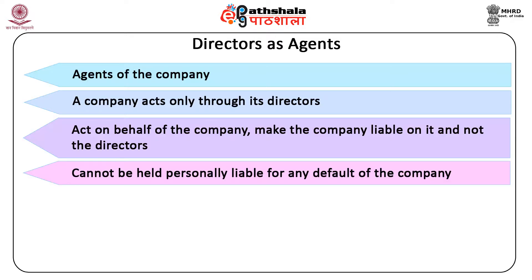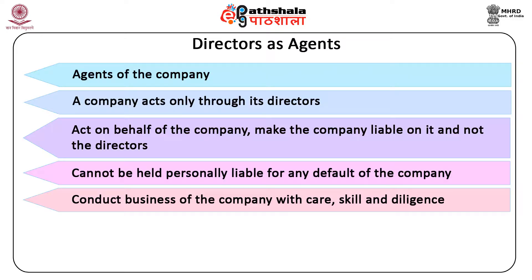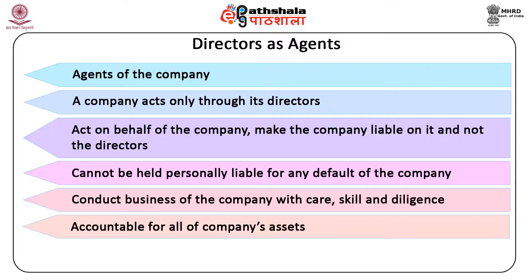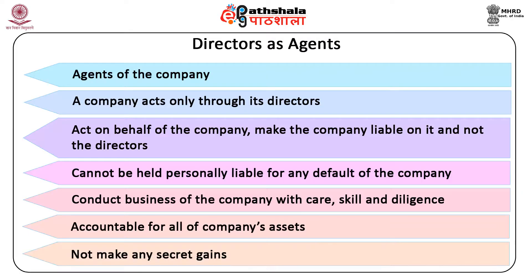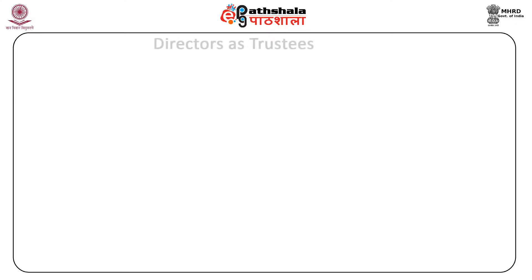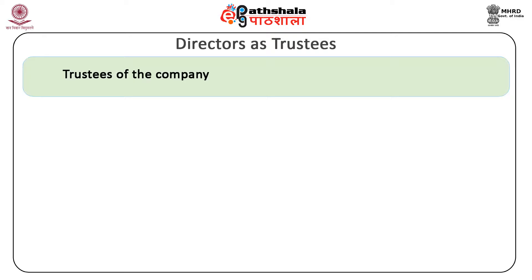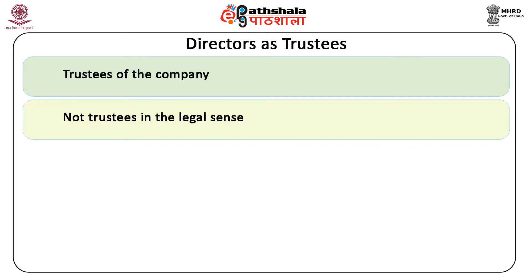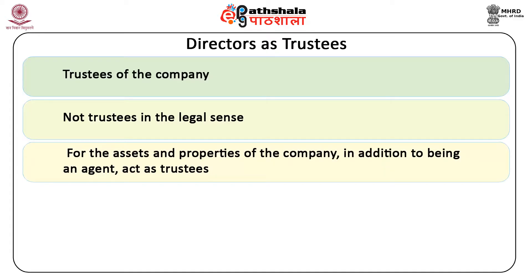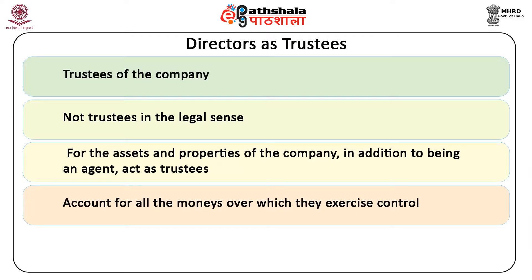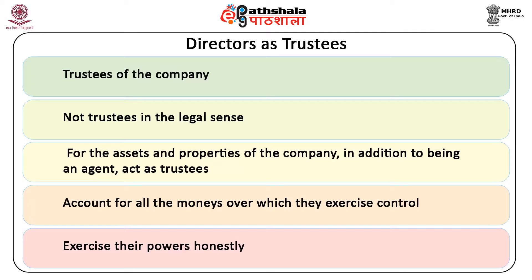Like agents, directors should conduct the business of the company with care, skill, and diligence. They are accountable for all of the company's assets under their control and the profits from assets of the company. They should not make any secret gains at the expense of the company. Directors as trustees: directors are also described as trustees of the company as they stand in a fiduciary capacity towards the company. However, they are not trustees in the legal sense as the rules applicable to trustees under the Trustees Act do not apply to directors. For the assets and properties of the company, in addition to being agents, they also act as trustees. They must account for all the monies over which they exercise control, and must exercise their powers honestly in the interest of the company and all shareholders, not their own sectional interest.